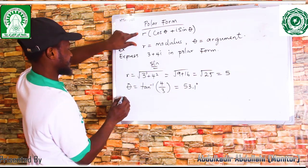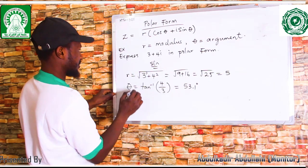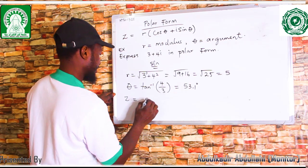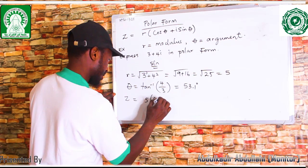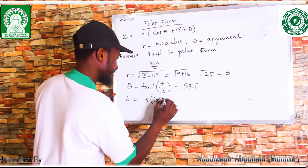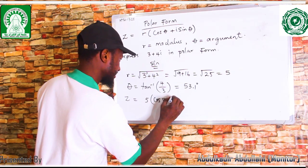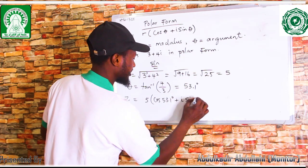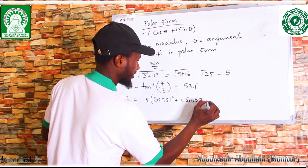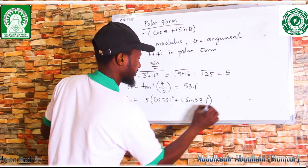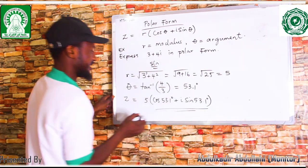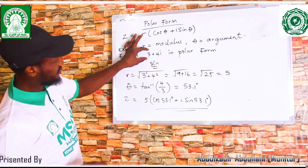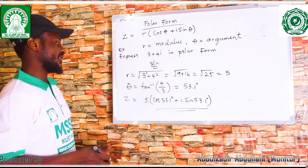Having theta and r, z is now equal to 5 times (cos 53.1° + i sine 53.1°). This is the expression of this complex number in polar form.